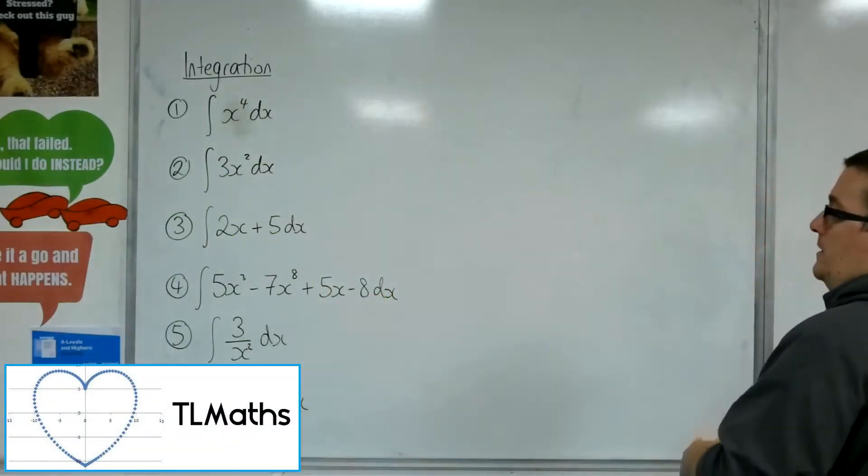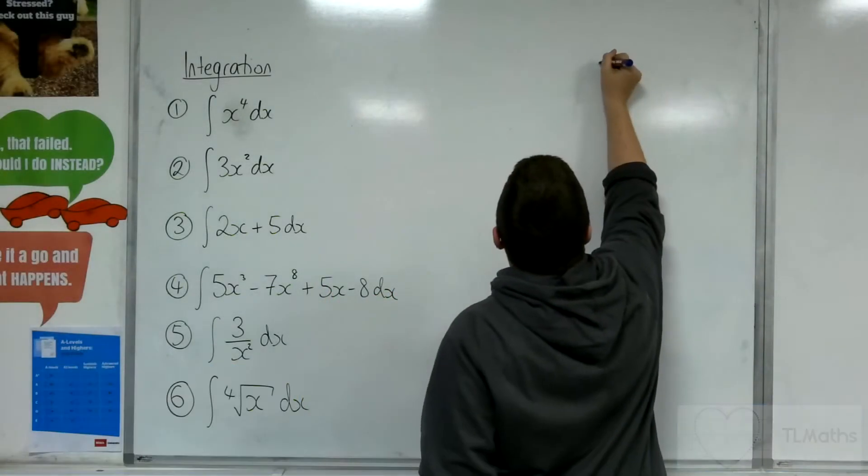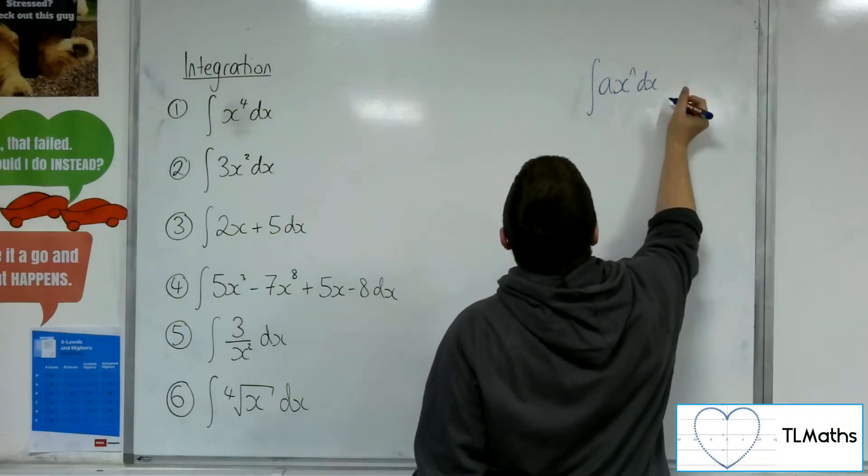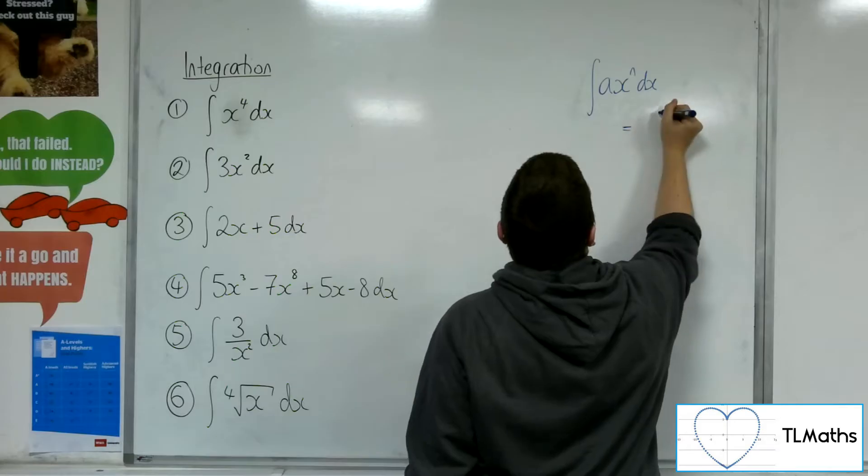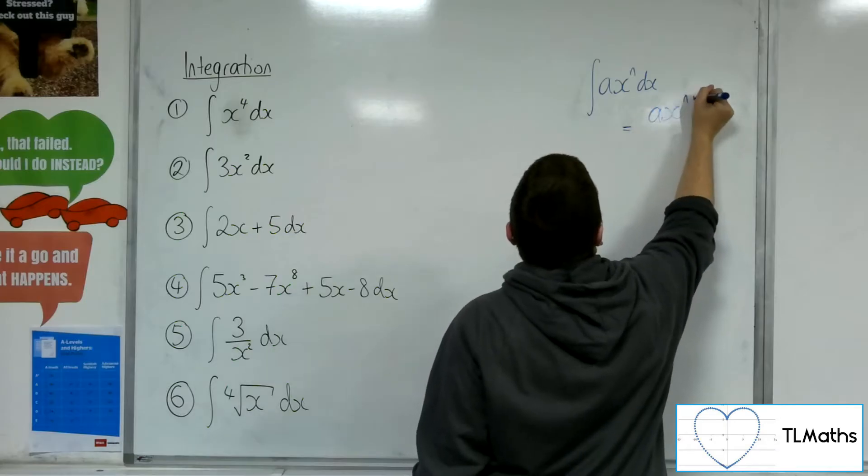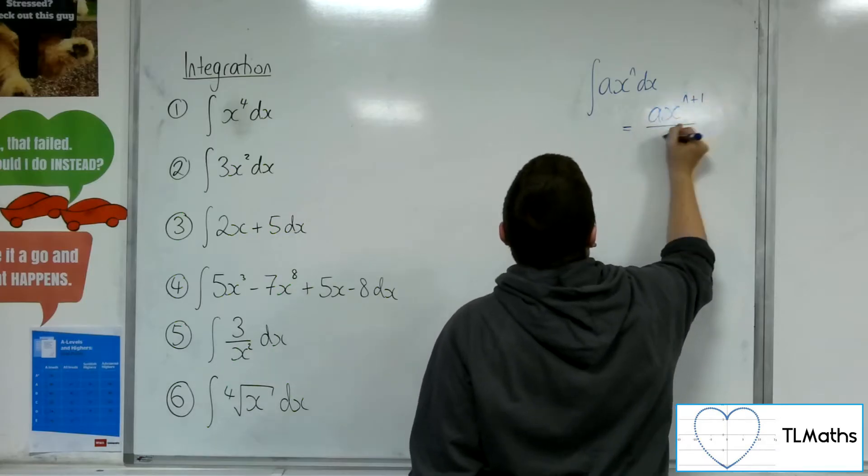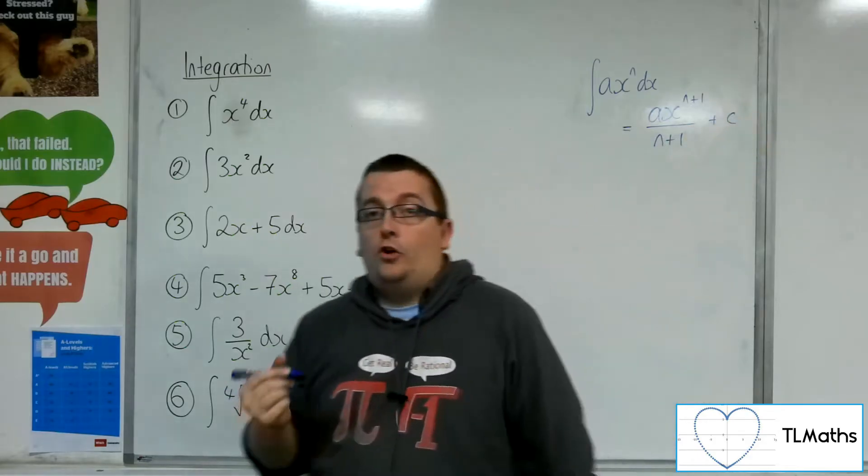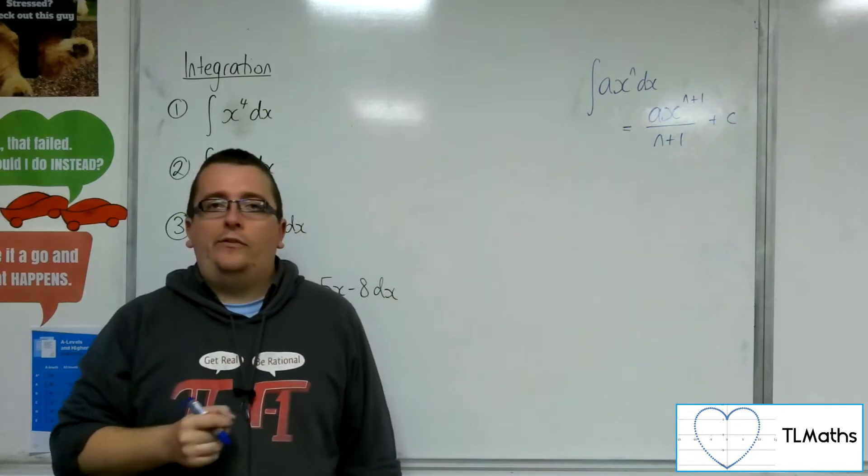The way that we integrate something of the form ax to the n, remember from the previous video, was that we add 1 to the power of x and then divide by the new power. And don't forget that constant of integration, that plus c.